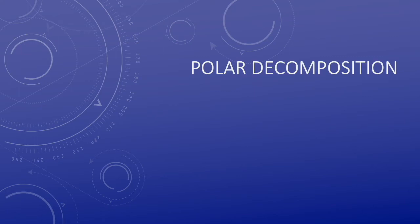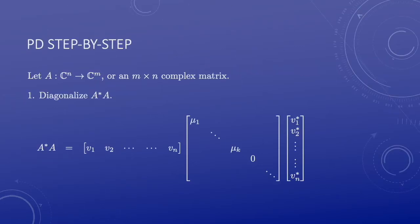In this video, let's work through some examples for the polar decomposition. Let's consider a linear transformation A between finite dimensional spaces. Under a fixed basis, it has a rectangular matrix representation.